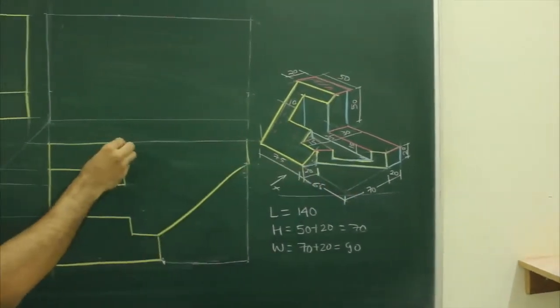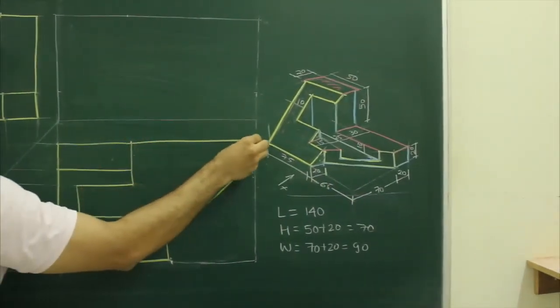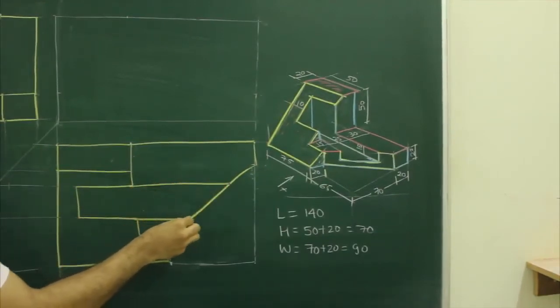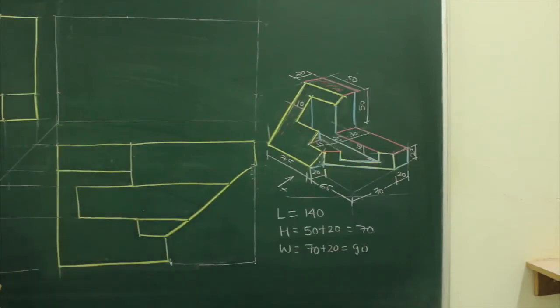After that, you complete this boundary, extend line from here, extend line from here. So we are done with top view, now we need to draw front view.